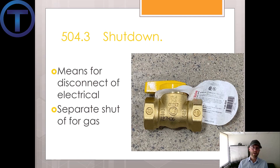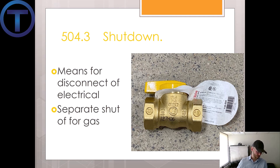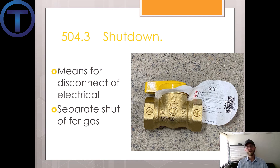504.3 talks about shutdown. A means for disconnecting an electric hot water supply from its energy supply shall be provided. So if it's electric, we have to be able to shut that off. A separate valve shall be provided to shut off the energy fuel supply for all other types of hot water supply systems — so if the water heater uses natural gas to heat, we have to have a separate shut-off valve for that appliance.